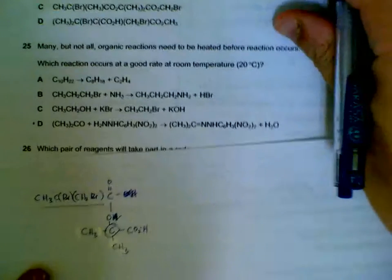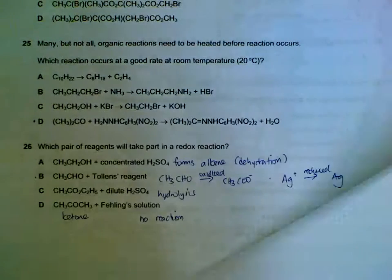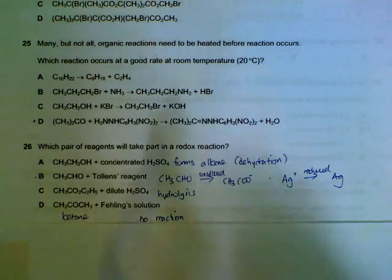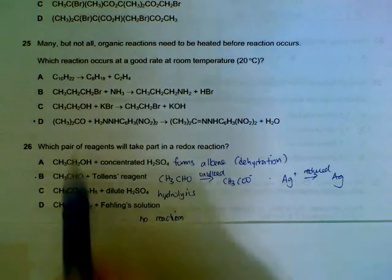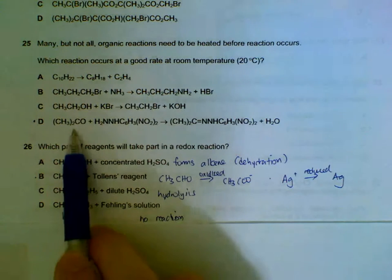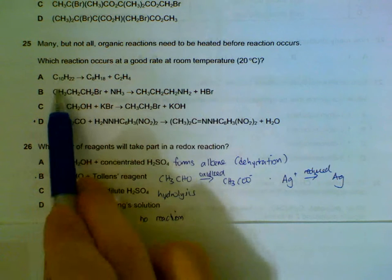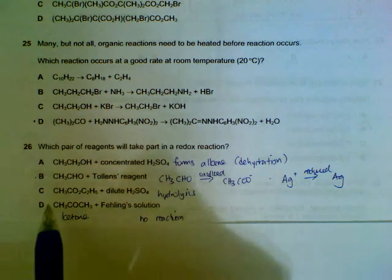Number 25 is a bit of recall — you have to be familiar with the conditions. The one that takes place at room temperature is option D; the other three options all require heating.